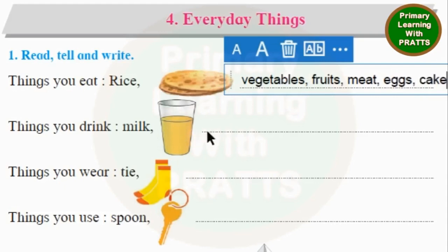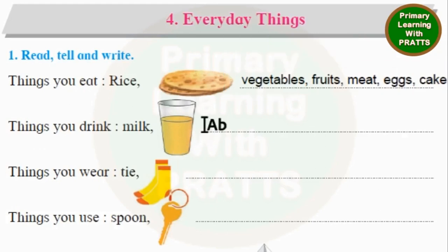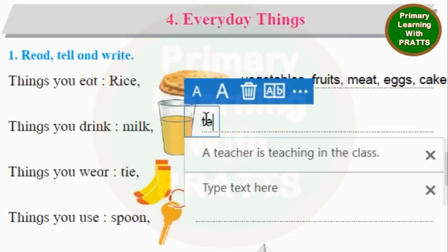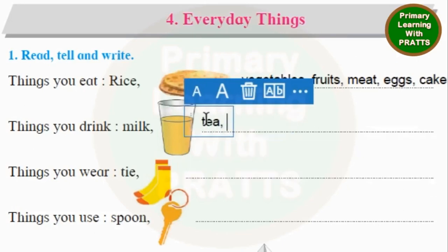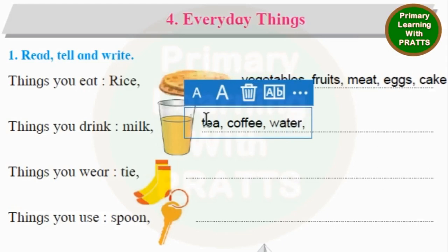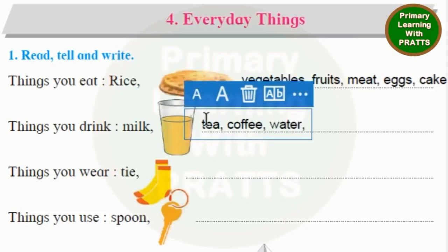Now, things you drink. They have given us Milk and Juice. We will continue adding. Tea is only for elders — children should not have Tea or Coffee. You can have Milk, Juice, and Water. We must drink plenty of water in a day. Children can also have Milkshakes.